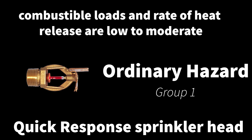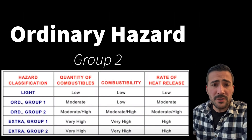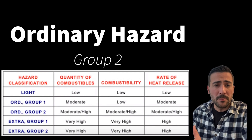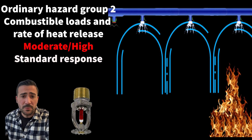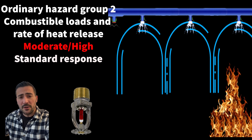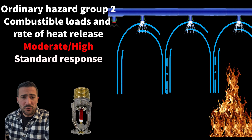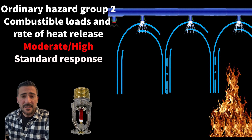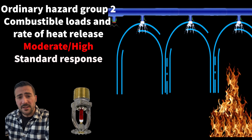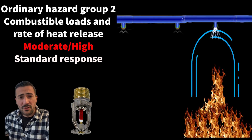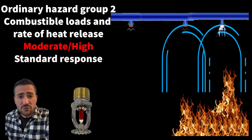Ordinary hazard Group 2 goes to moderate-high on combustible loads and rate of heat release. For this reason, we're going to use the standard response sprinkler head. Take a look at this picture — you can see a fire in the corner but all the sprinkler heads are going off. This has been proven to happen when you use a quick response in ordinary Group 2 or extra hazard occupancy, where combustible loads and rate of heat release are on the high side. The theory is too many heads going off at the same time taxes the system's pressure, causing it to be less effective on controlling the fire. When we use a standard response head, the right amount of heads go off in the correct locations, proving to be better at controlling and putting out the fire.